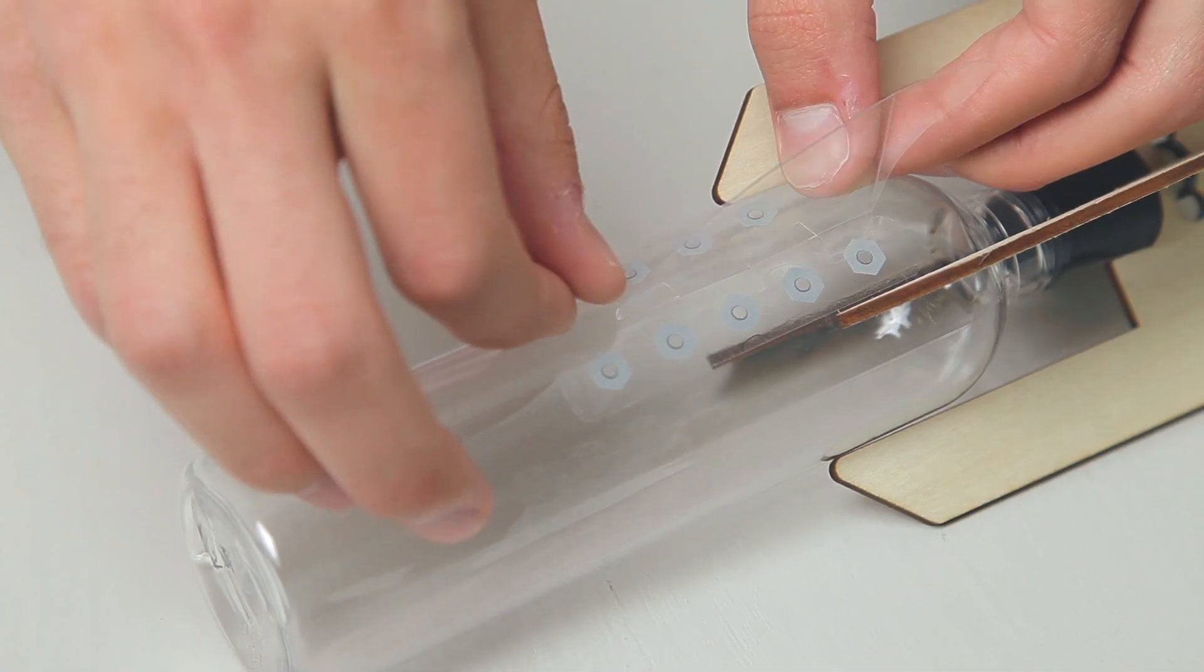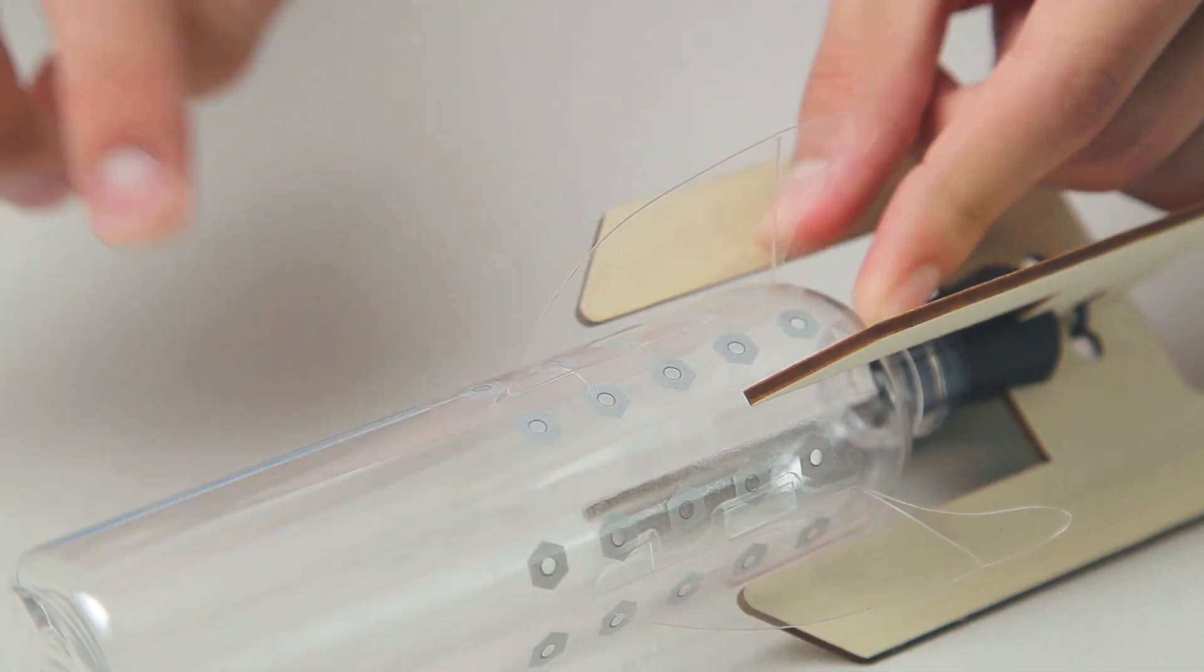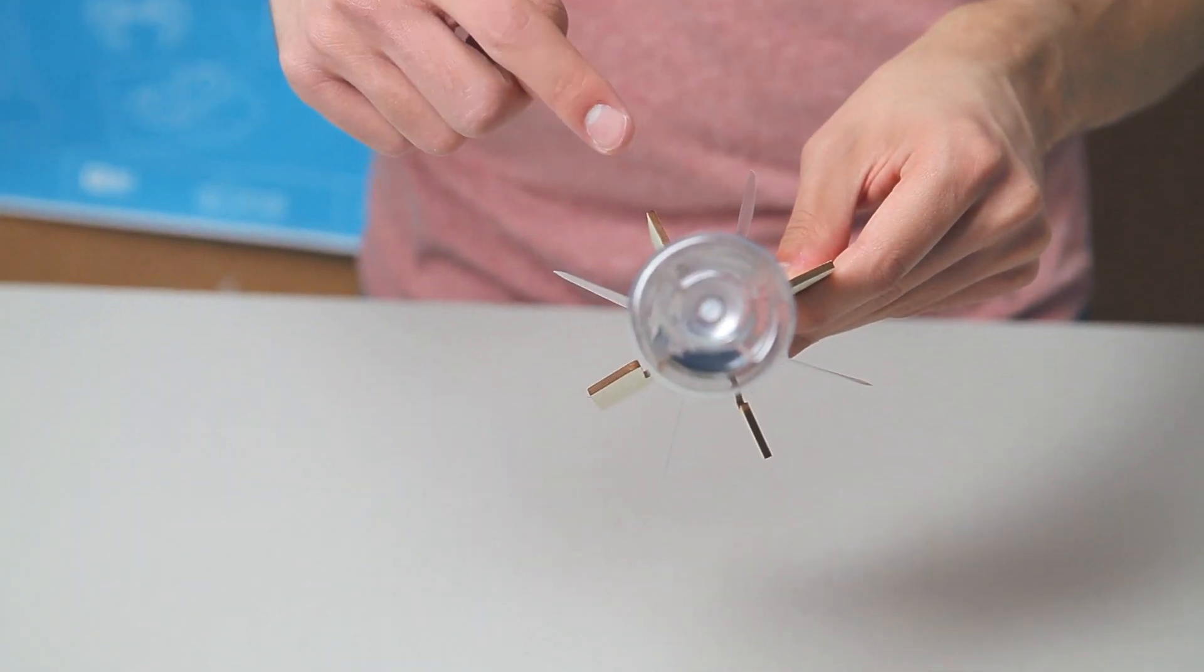Use two stickers to attach each fin to the side of your rocket. Make sure to space your fins evenly around the bottle.